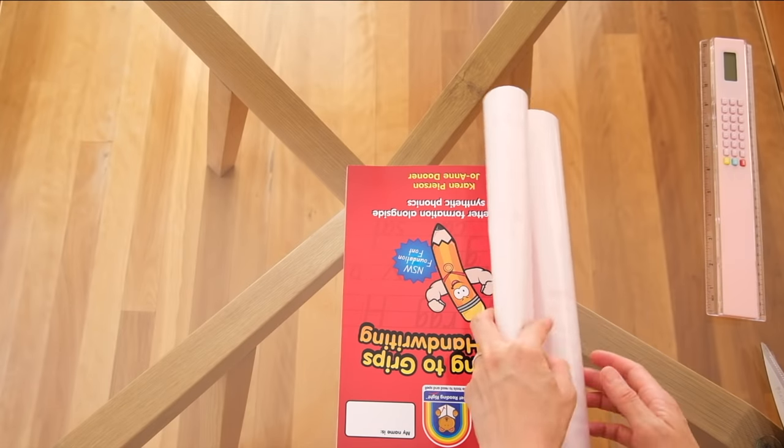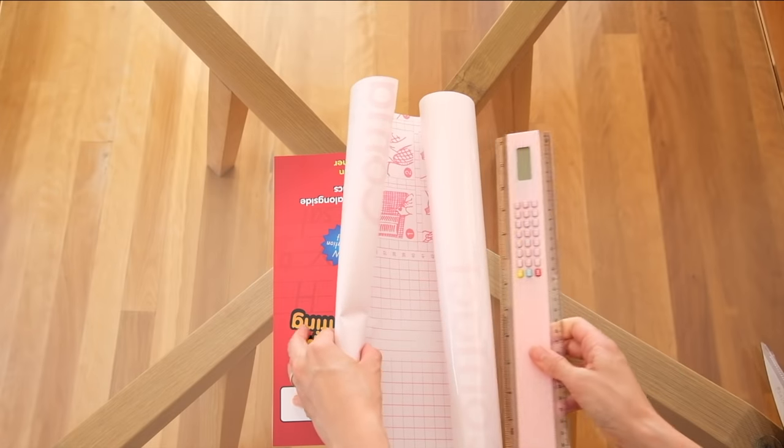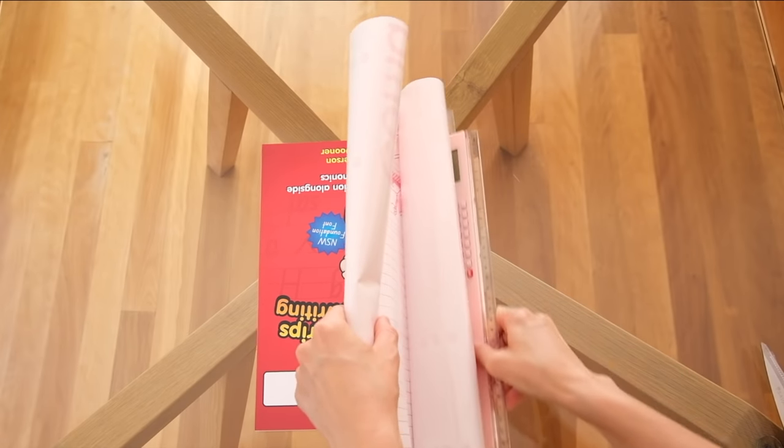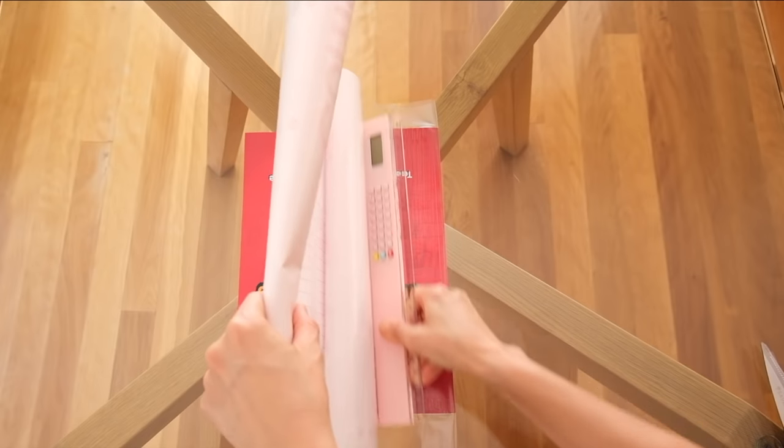Hold on to the non-sticky part of the contact paper and as you press your ruler firmly and make a slow sliding sawing action, you gently pull the contact paper at the same time.